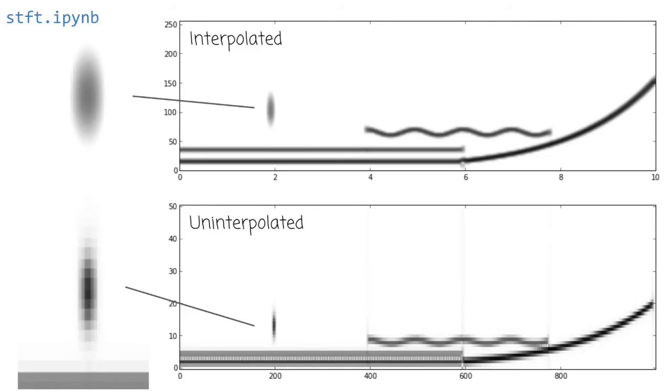So it strikes me that maybe we should be looking at these things in a sort of uninterpolated way. Maybe we should acknowledge the tiling, essentially, and reflect it in our displays of spectrograms.